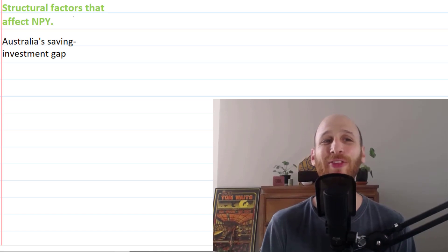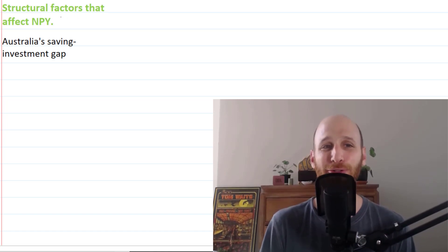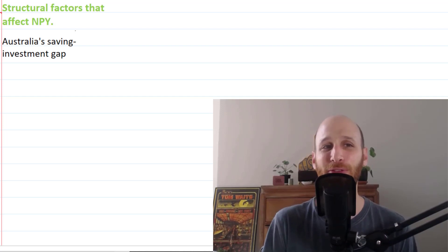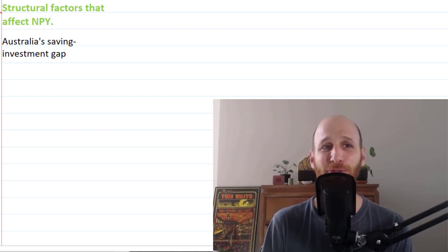The final part in this video is the structural factors that affect NPY. Remember that structural factors are underlying - they don't change generally with economic conditions. There's only one structural factor that affects the value of Australia's net primary income account, but it's a really big one.